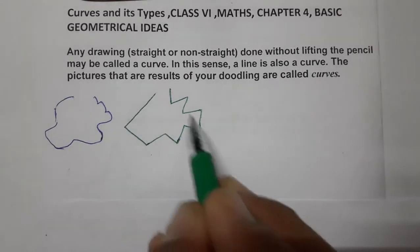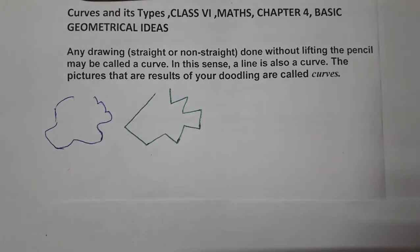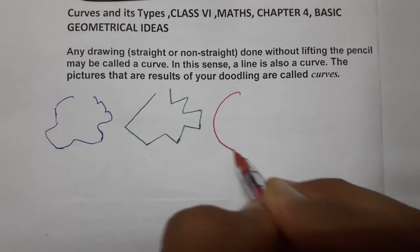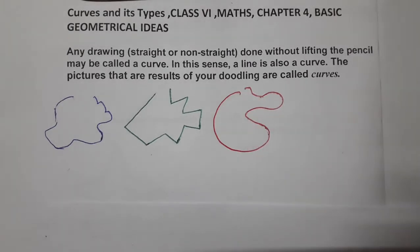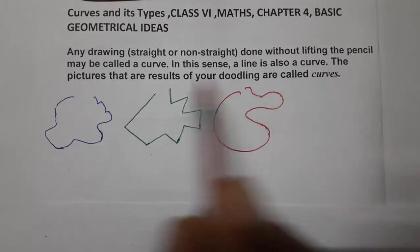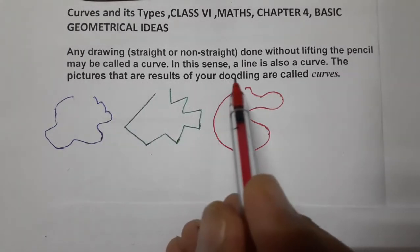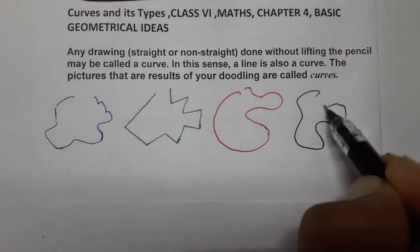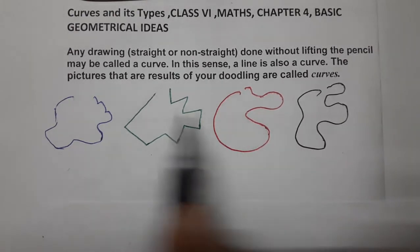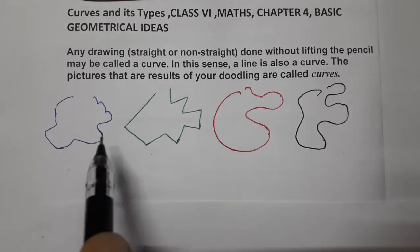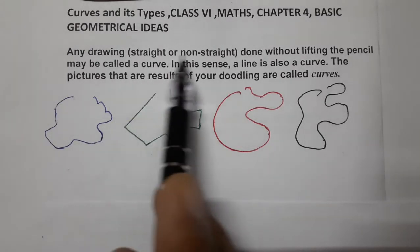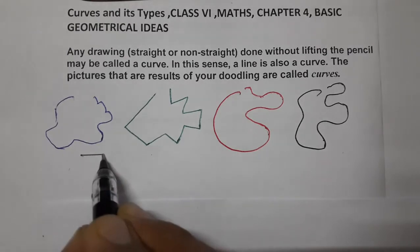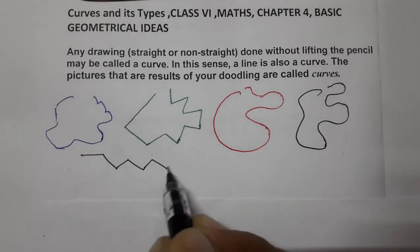So these are lines — the curve, this is a curve, anything. So this is also a curve, this is also a curve. The pictures that are results of drawings are called curves. These are all curves — straight or non-straight. We can make straight ones too, so these are also curves.